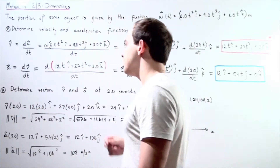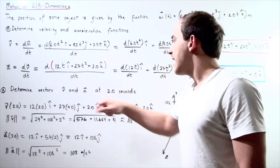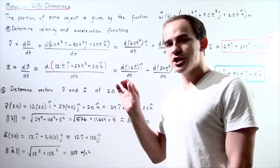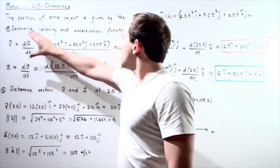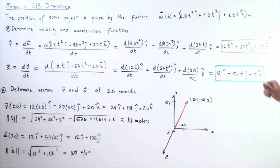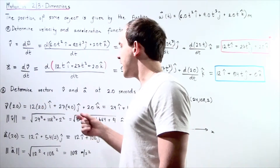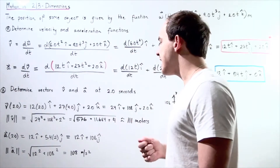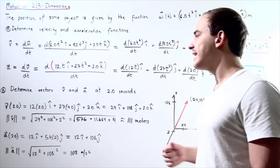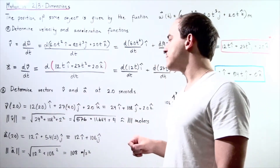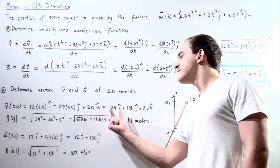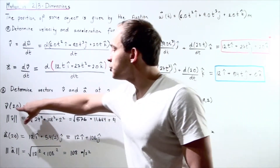Let's find part B: determine vectors v and a at 2 seconds. I want to find the magnitude and actual position of those vectors. Taking the velocity function from part A and plugging in t equals 2: 12 times 2 gives 24 i-hat, plus 27 times 2 squared — which is 4 — times j-hat gives 108 j-hat, plus 2.0 k-hat since there is no t in that term. So my velocity vector at 2 seconds is 24 i-hat plus 108 j-hat plus 2.0 k-hat.